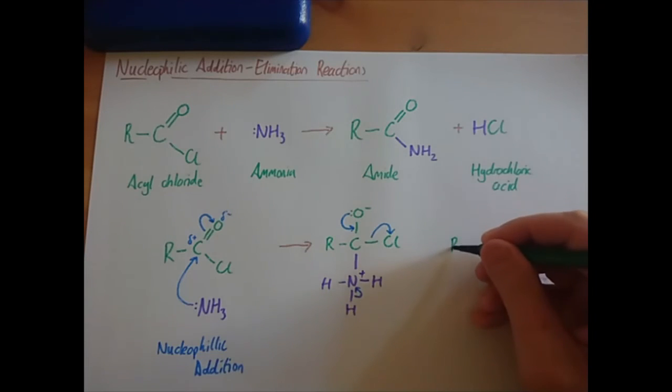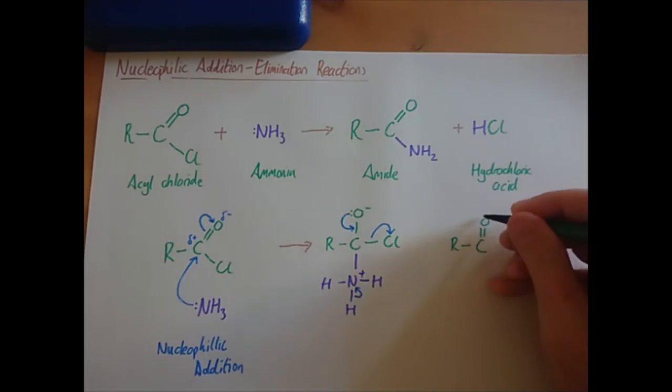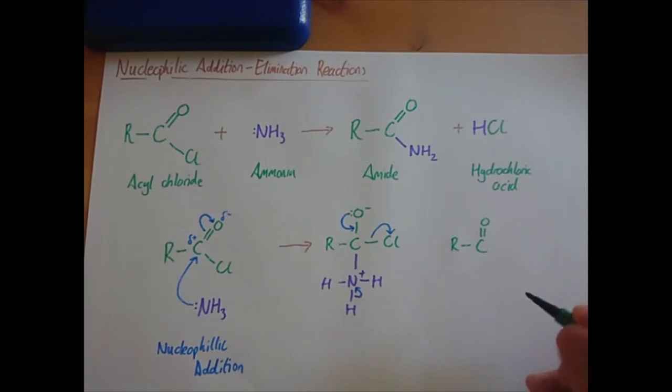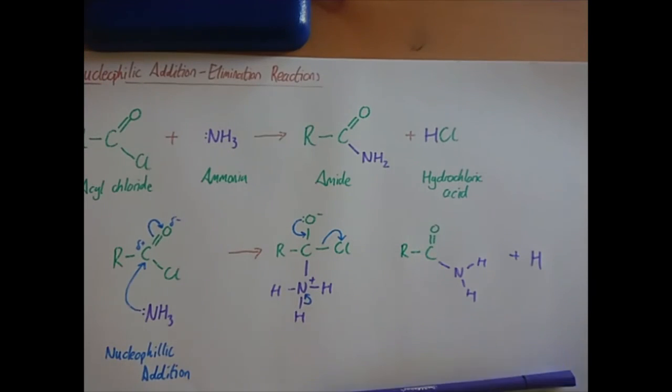So what we're left with: we still haven't touched the R-C bond, we've reformed the double bond with the oxygen, we've removed the chlorine, and we've attached an NH2 plus a hydrogen and a chlorine, so it's hydrogen chloride.